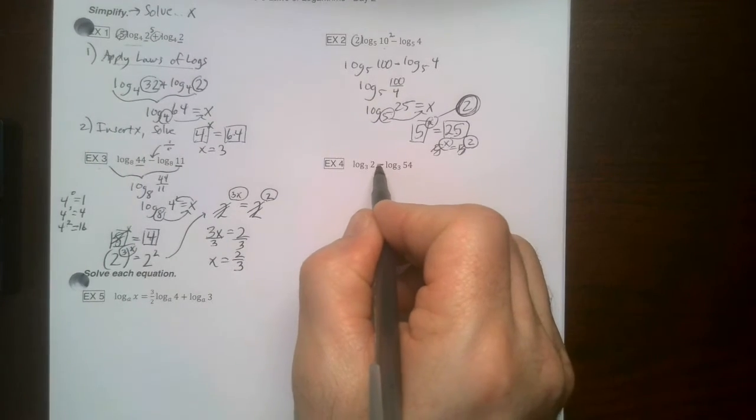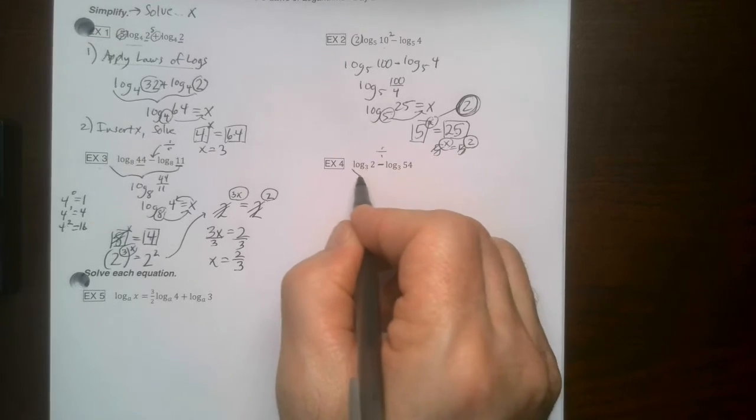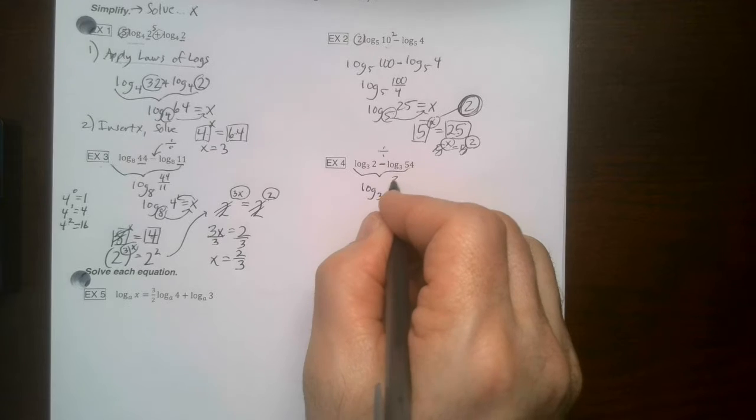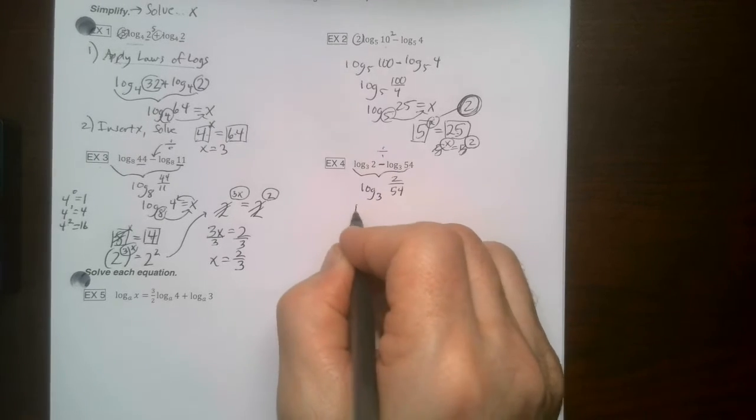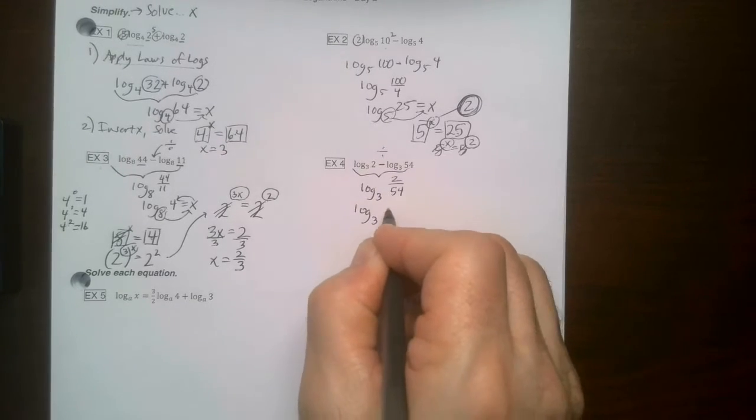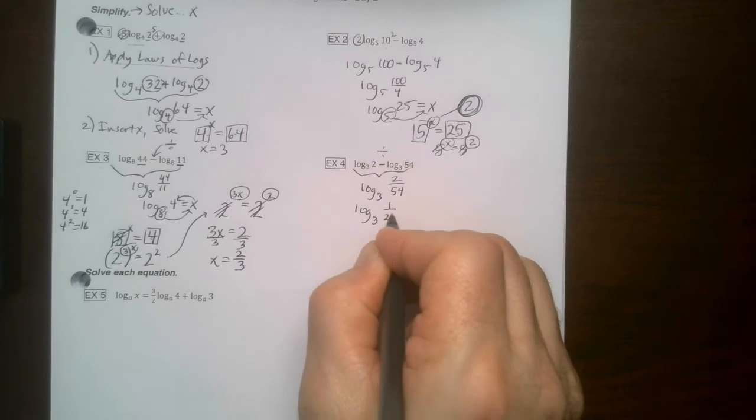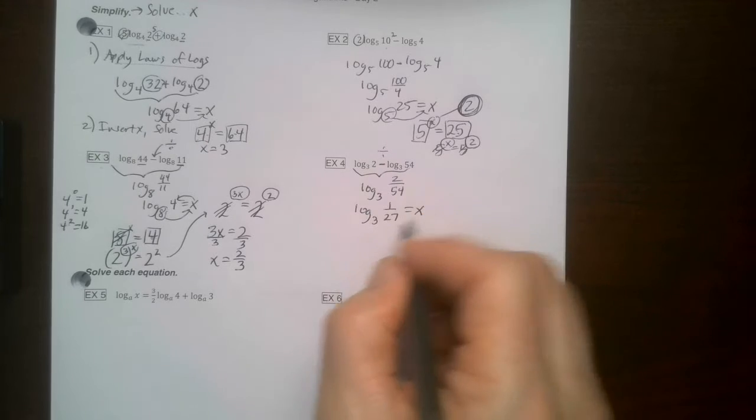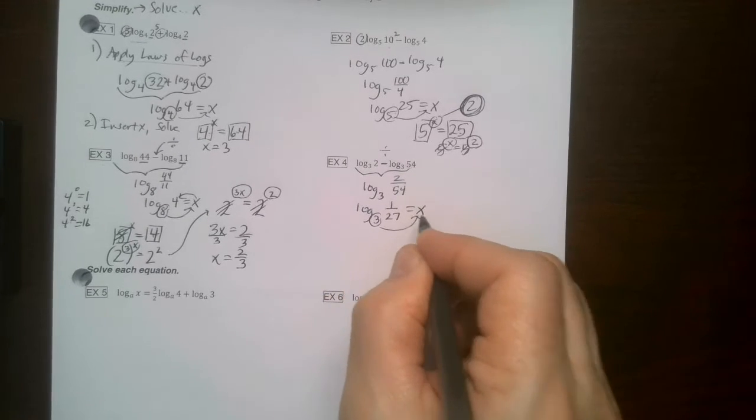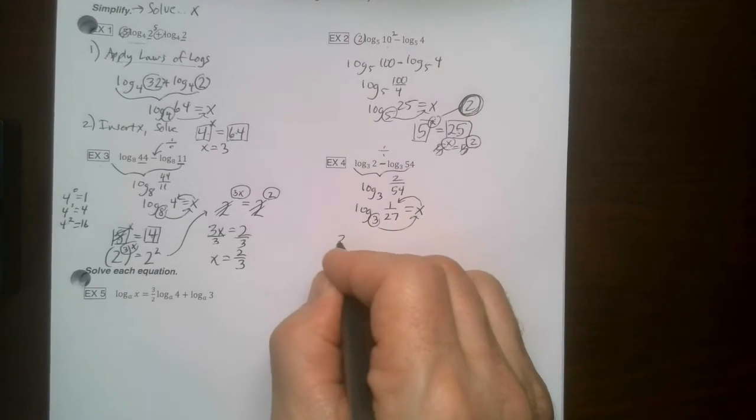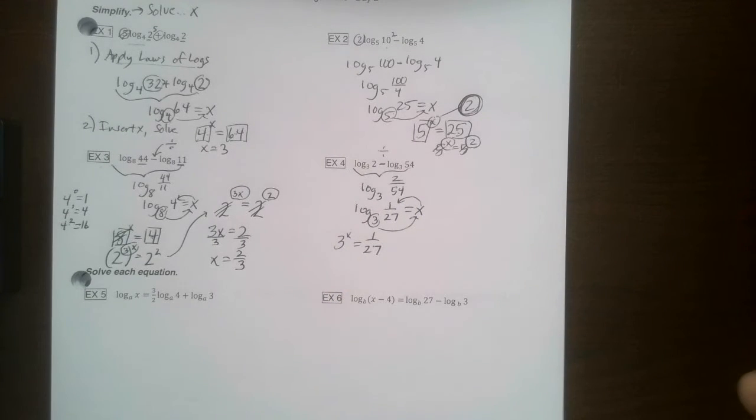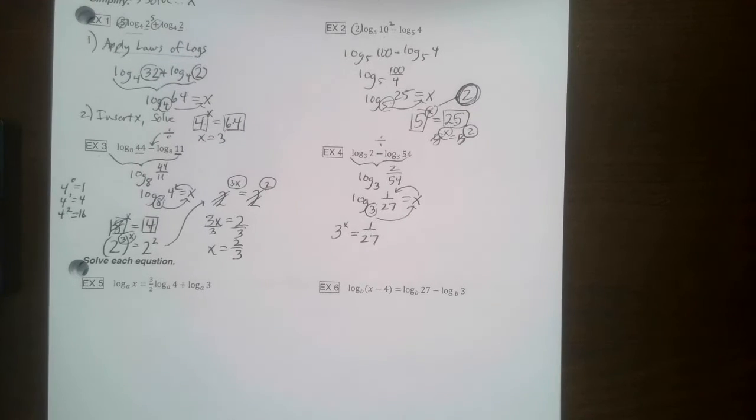Again, subtraction means division if we're going to turn them into one log. So it's log base 3, 2 over 54, which is just the same thing as log base 3, 1 over 27. And now we actually insert our X, start here, go here, go here. In other words, 3 to the X equals 1 over 27. And this is why we practiced all those problems in the previous section.